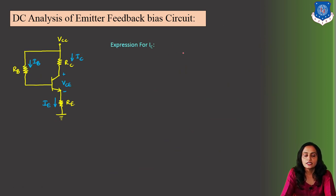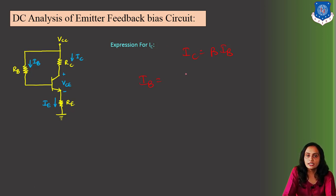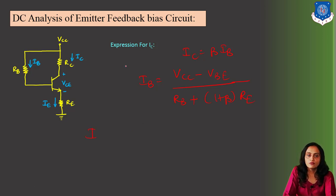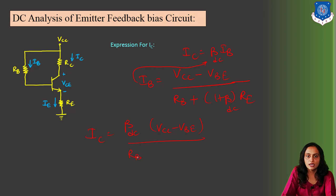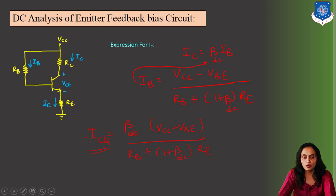Now we will calculate the equation for IC. IC = β·IB, and the value of IB we already calculated: (VCC − VBE) / (RB + (1 + β)·RE). Substituting this value of IB, we get ICQ = β_DC · (VCC − VBE) / (RB + (1 + β_DC)·RE). This is one of the coordinates of the quiescent point.